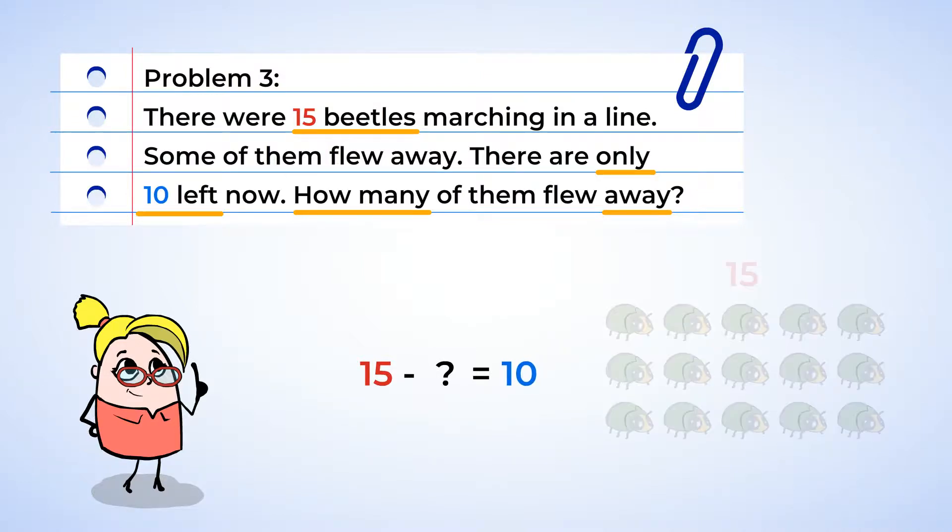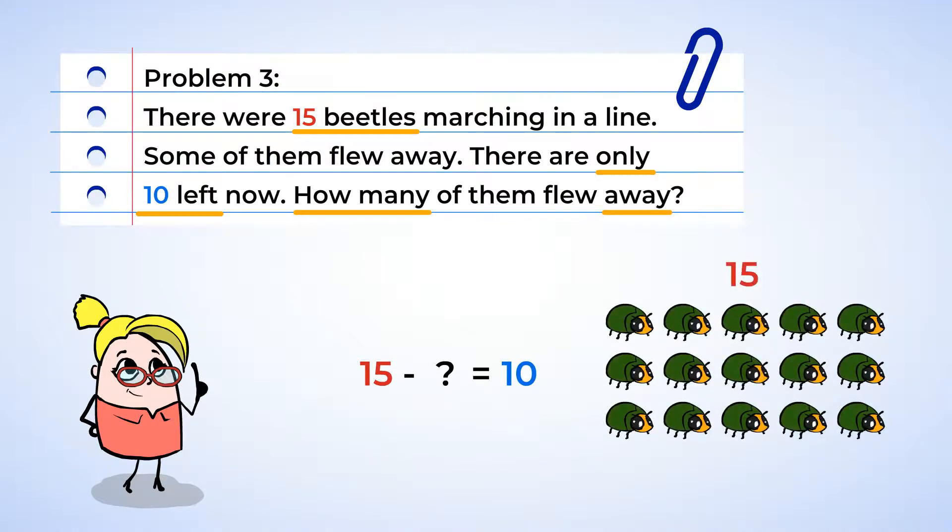Let's think back to when there were fifteen beetles, and let's take them away one by one until there are only ten left. To show that we're taking away, we can simply cross out a beetle. Now let's count backwards until you get to ten. Fourteen, thirteen, twelve, eleven, ten, and there are ten left. And how many were taken away? Five. Now we know that the missing number in our subtraction sentence is five. Fifteen minus five equals ten.